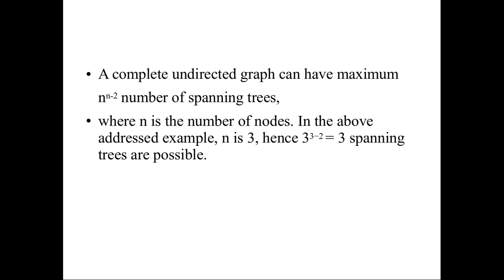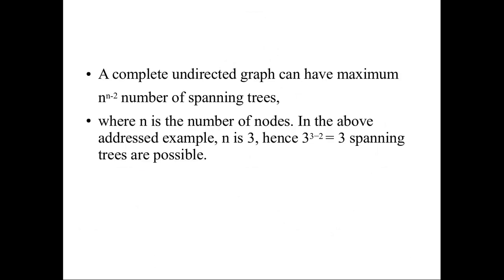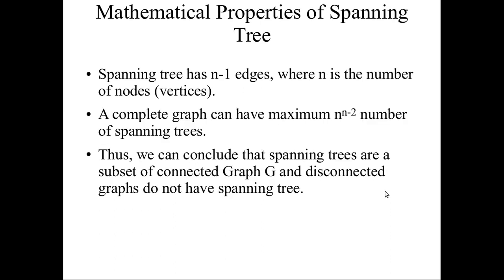A complete undirected graph can have a maximum of n^(n−2) number of spanning trees. Here it is a three-node graph, so it should have 3^(3−2) = 3, meaning it is having three possible spanning trees. The mathematical properties are: the tree has n−1 edges, where n is the number of nodes, and it has n^(n−2) number of spanning trees.